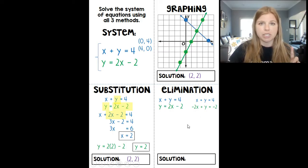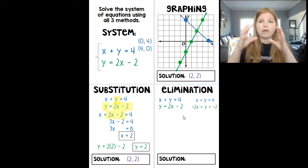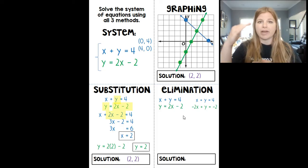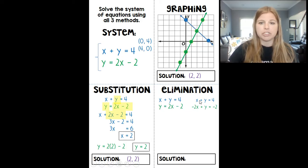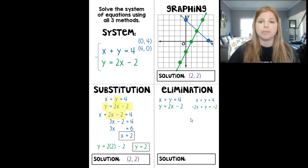Now we learned for elimination that if I have opposite signs of the same variable, if I add them, they'll eliminate out. So if I was to add these two equations together, x plus negative 2x is a negative x. That doesn't eliminate out. y plus y is 2y. That doesn't eliminate out. So when addition doesn't work to eliminate, we use subtraction. Because if I do y minus y, my y's will eliminate out.